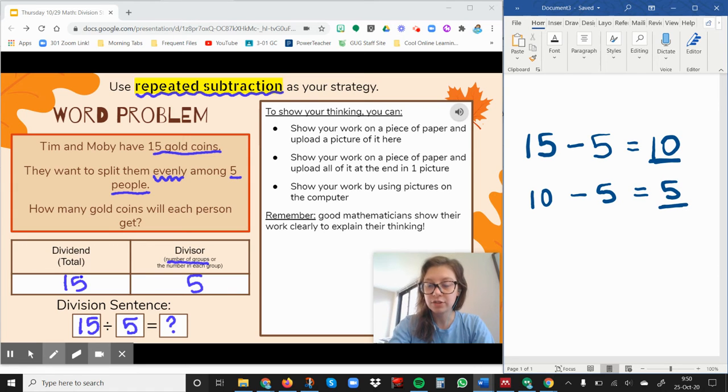And I have to start with this number. Now I'm going to do 5 minus 5 equals 0. When I get to 0, that's how I know I'm done.